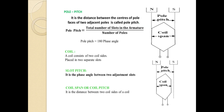Pole pitch is the distance between the centers of two adjacent poles, equal to the total number of armature slots divided by the number of poles. A coil consists of two coil sides placed in two separate slots. Slot pitch is the phase angle between two adjacent slots. Coil span or coil pitch is the distance between the two coil sides of a coil.